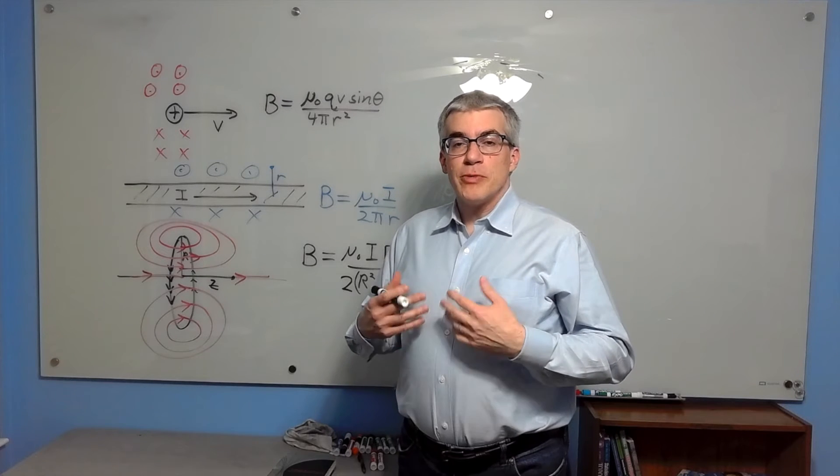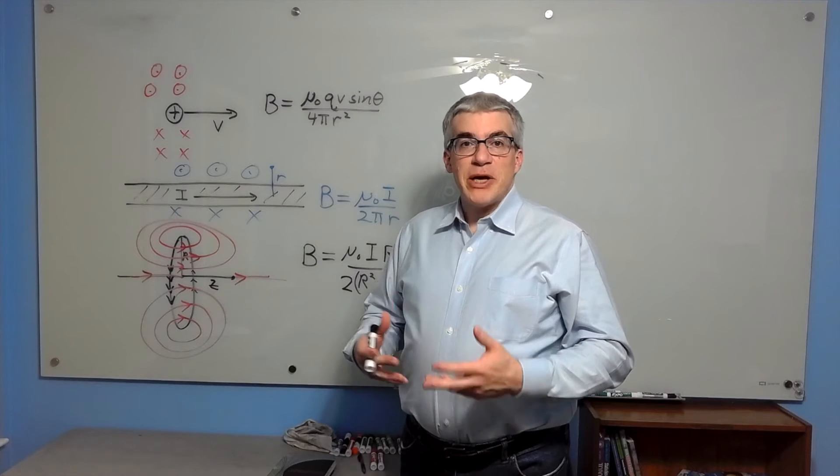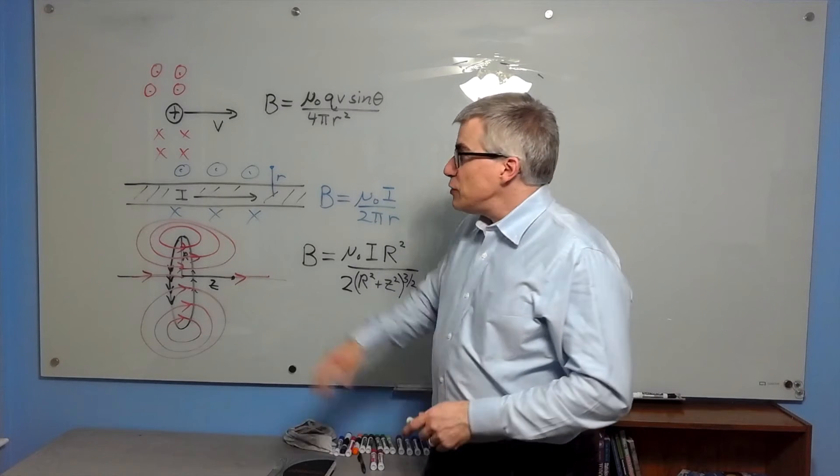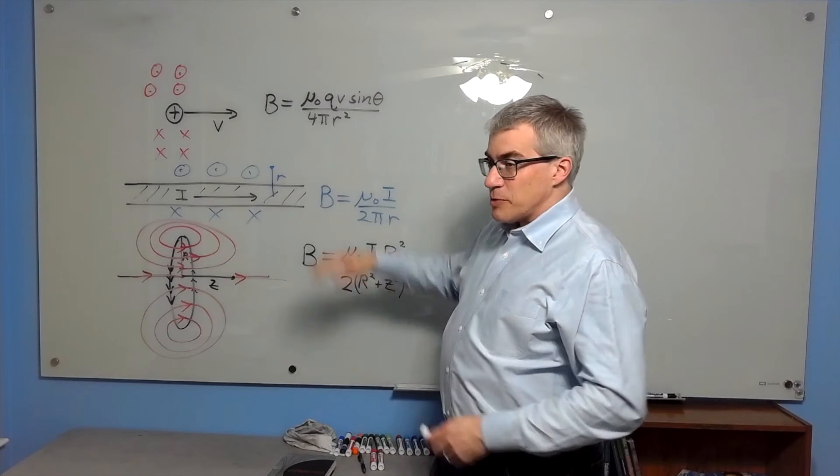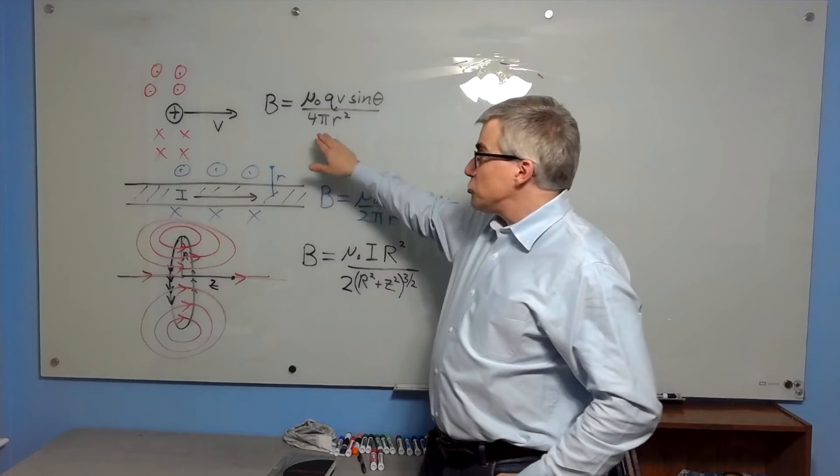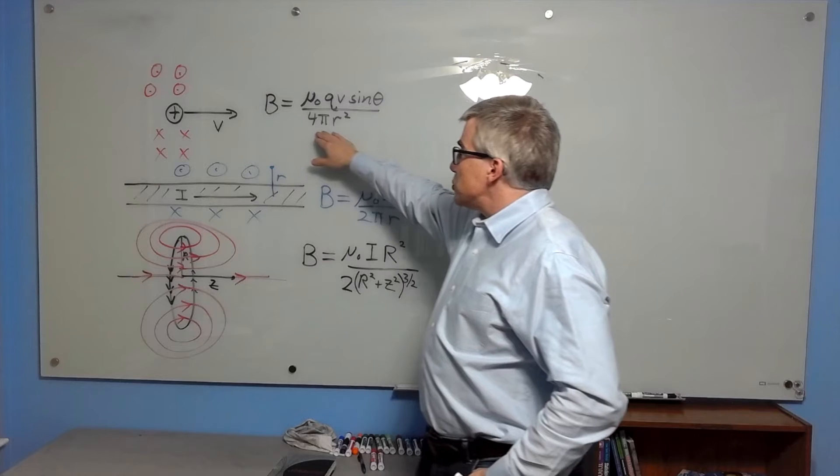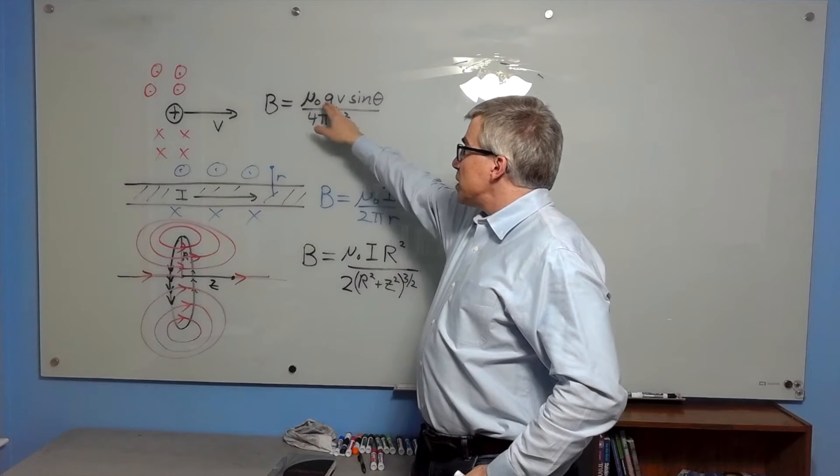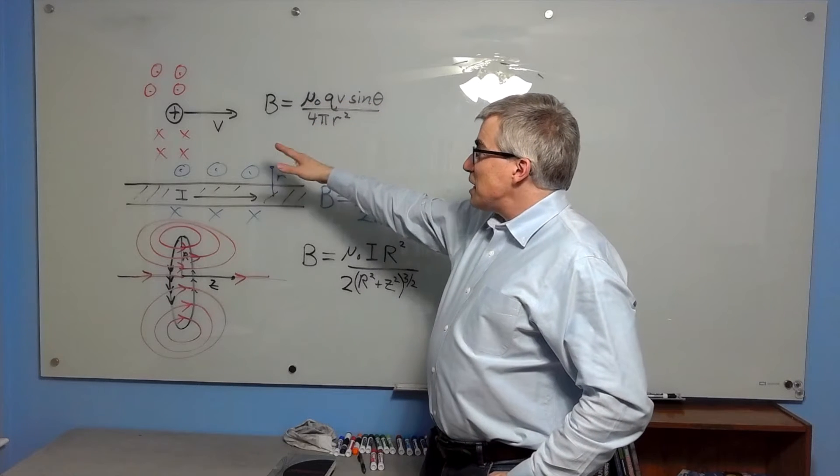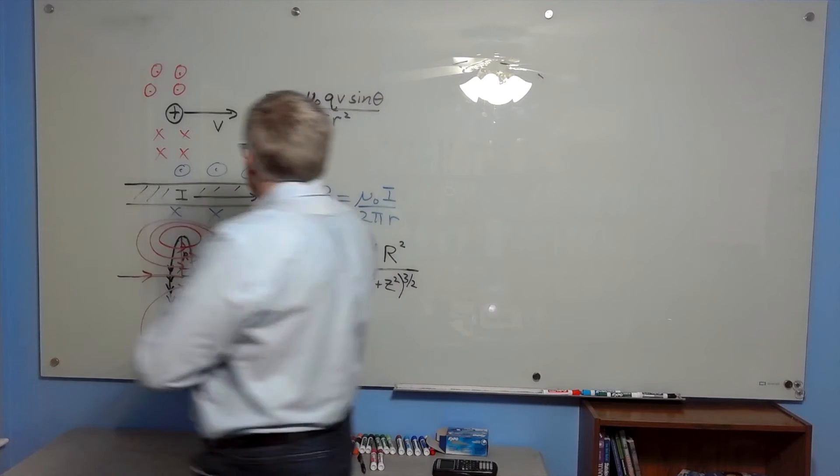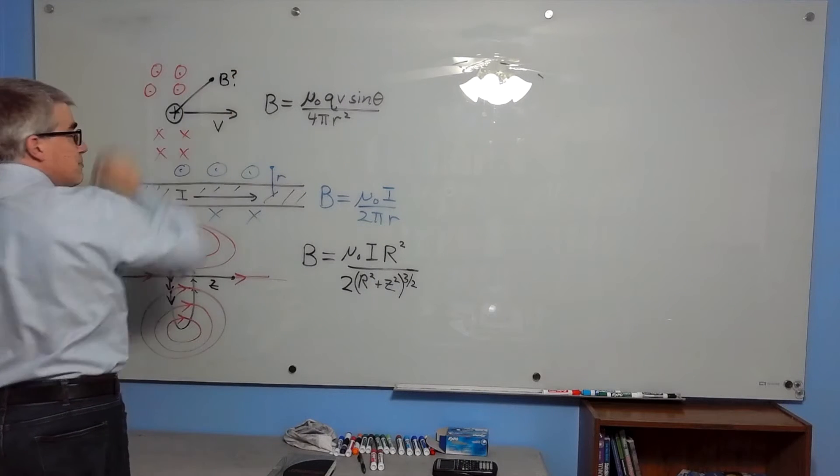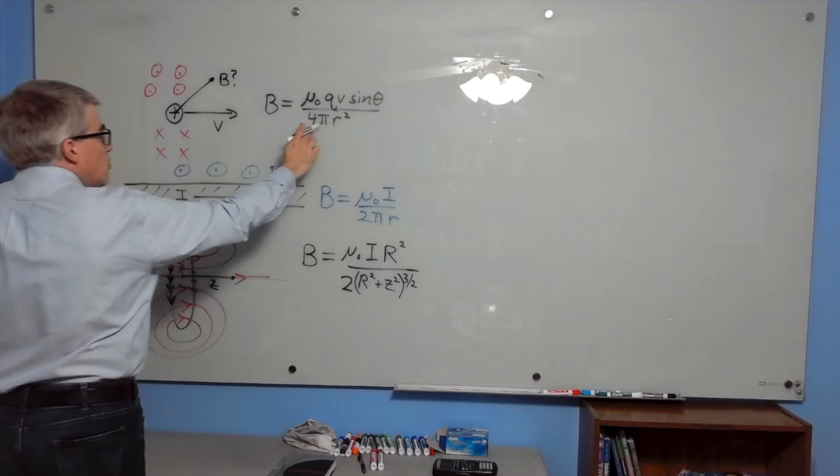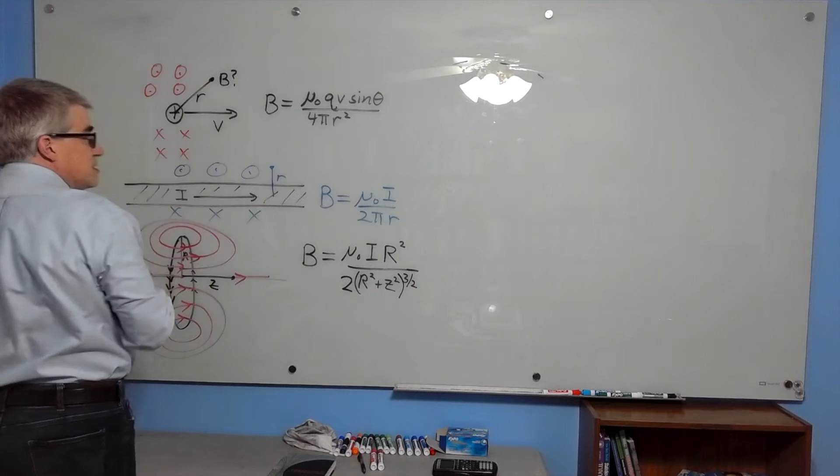What are the formulas for magnetic field? It depends on the source. If you have a moving charge, strictly speaking there isn't a perfect formula for it, but if you're going to use an approximation in an intro class, the magnetic field strength would be mu naught q v times the sine of the angle between the v and whatever spot you want to know the magnetic field at, over 4 pi distance squared.